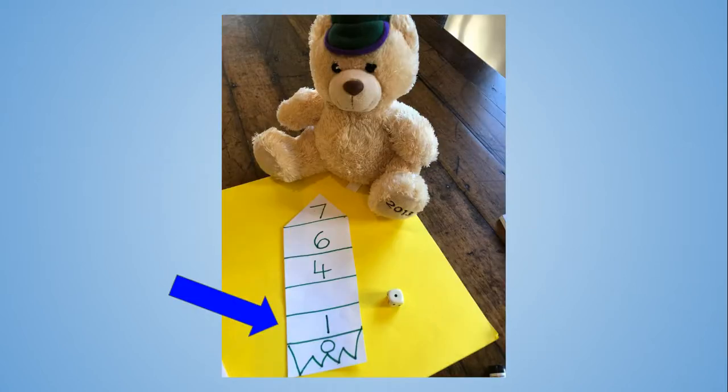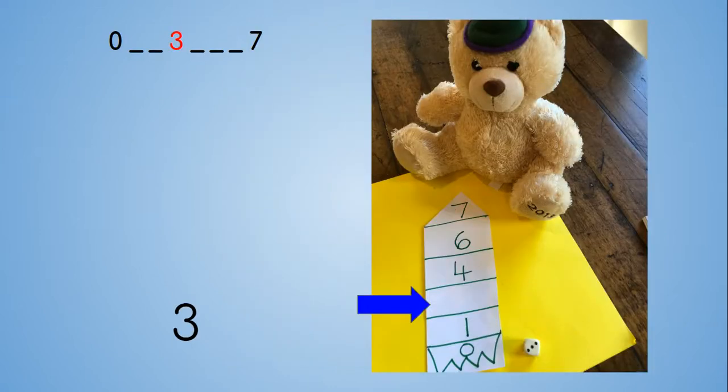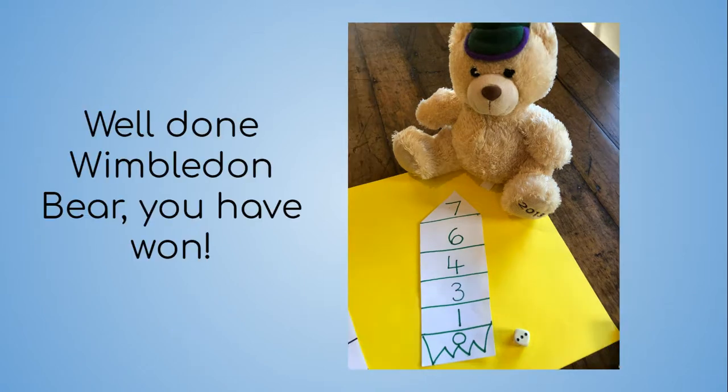Wimbledon Bear's thrown a 1. He found room for 1 above his 0. Uh oh! Ted Bear's thrown a 3. He hasn't got room on his rocket for the number 3. There's no space between his 4 and 2. Wimbledon Bear's thrown a 3. Has he got space to write a 3? Yes! Well done Wimbledon Bear, you've won the game!